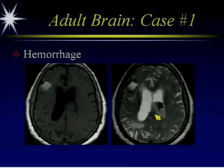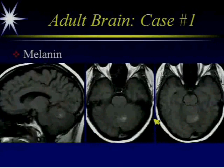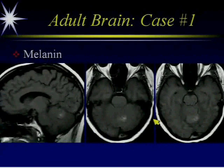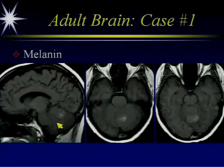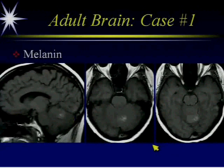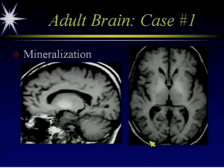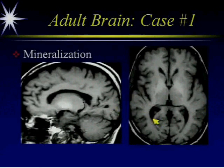Mineralization can also be bright on T1. We can see this bright signal in the basal ganglia, which can be due to calcification in conditions such as hyperparathyroidism, pseudohypoparathyroidism, or hypoparathyroidism. It can also be bright due to manganese deposition, which you can get in total parenteral nutrition administration or in liver failure.